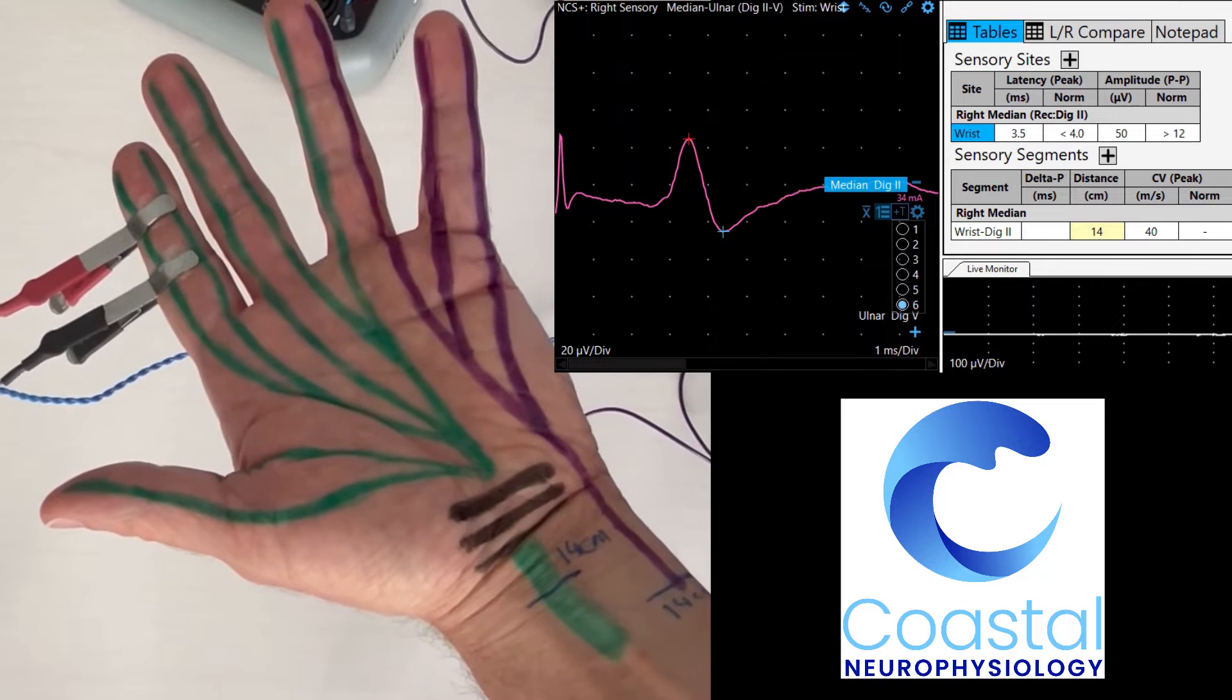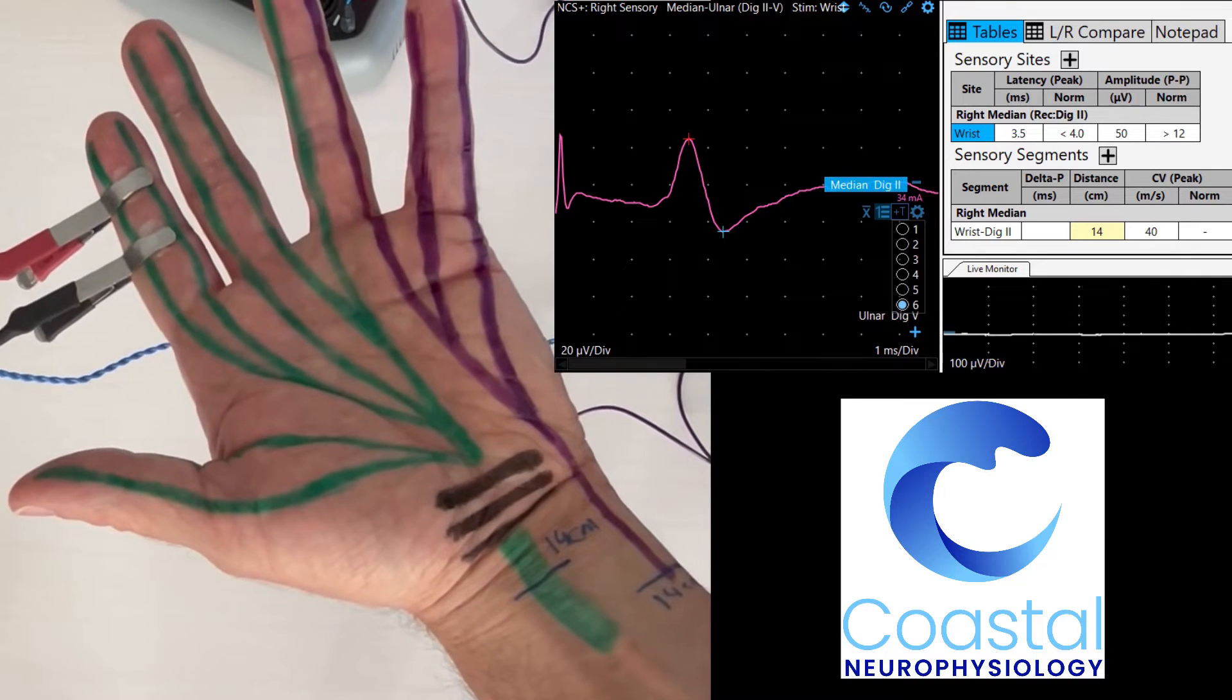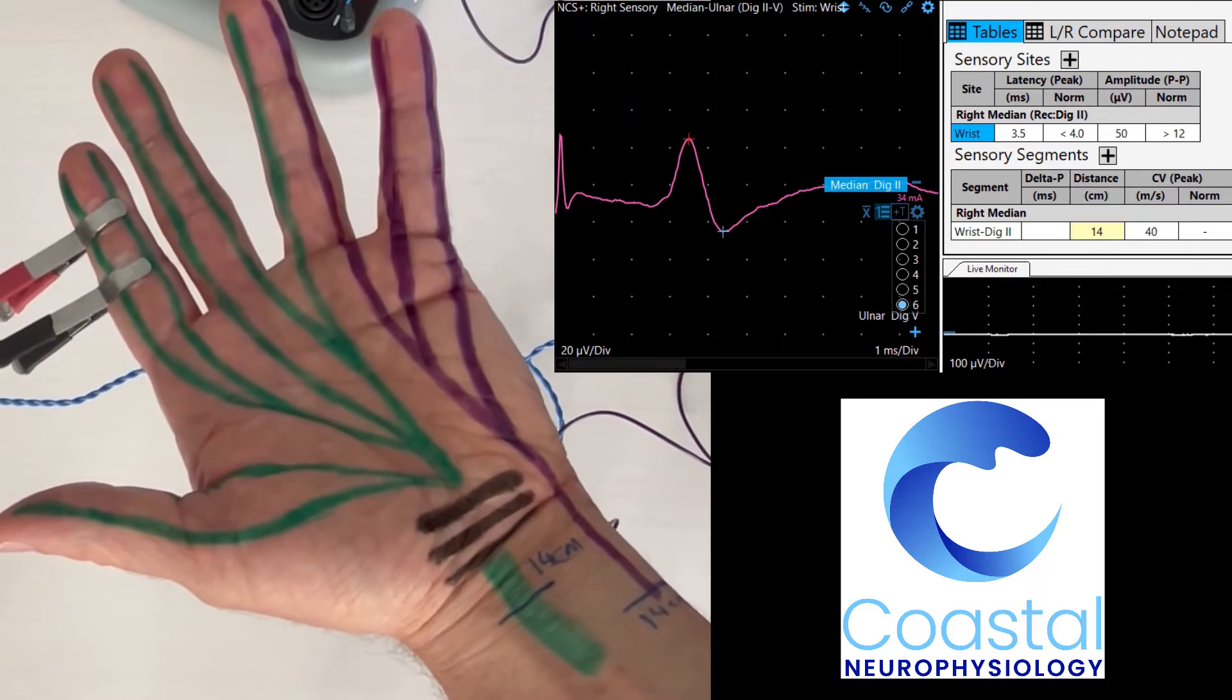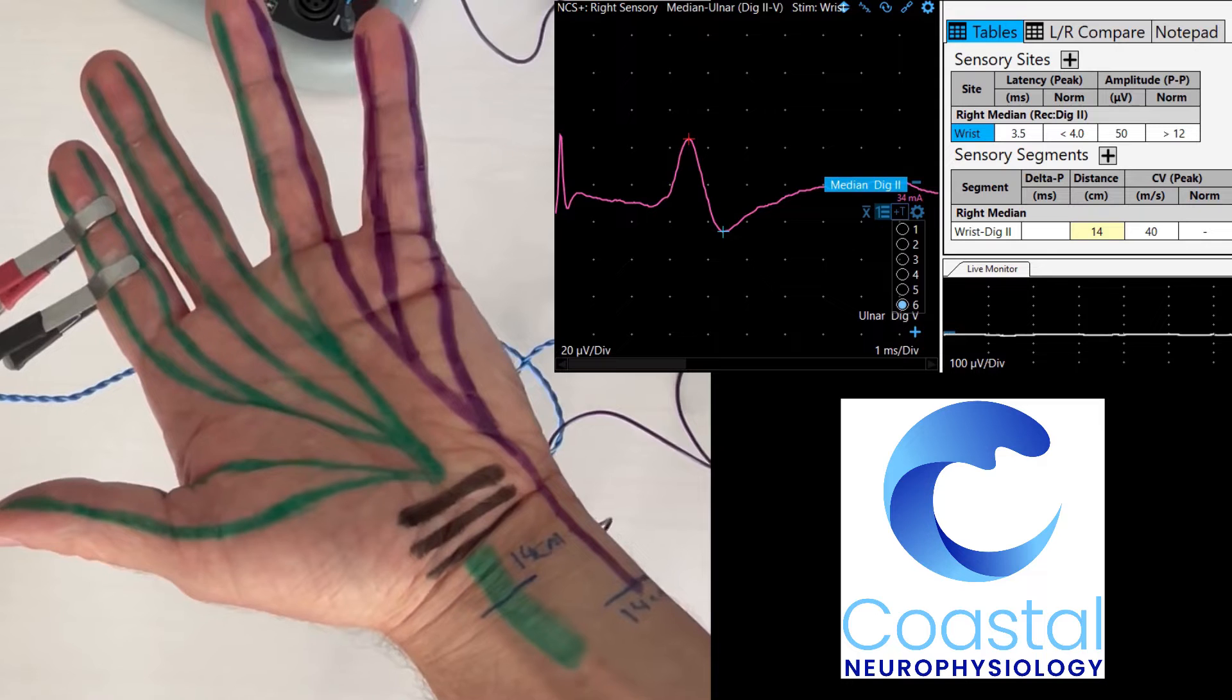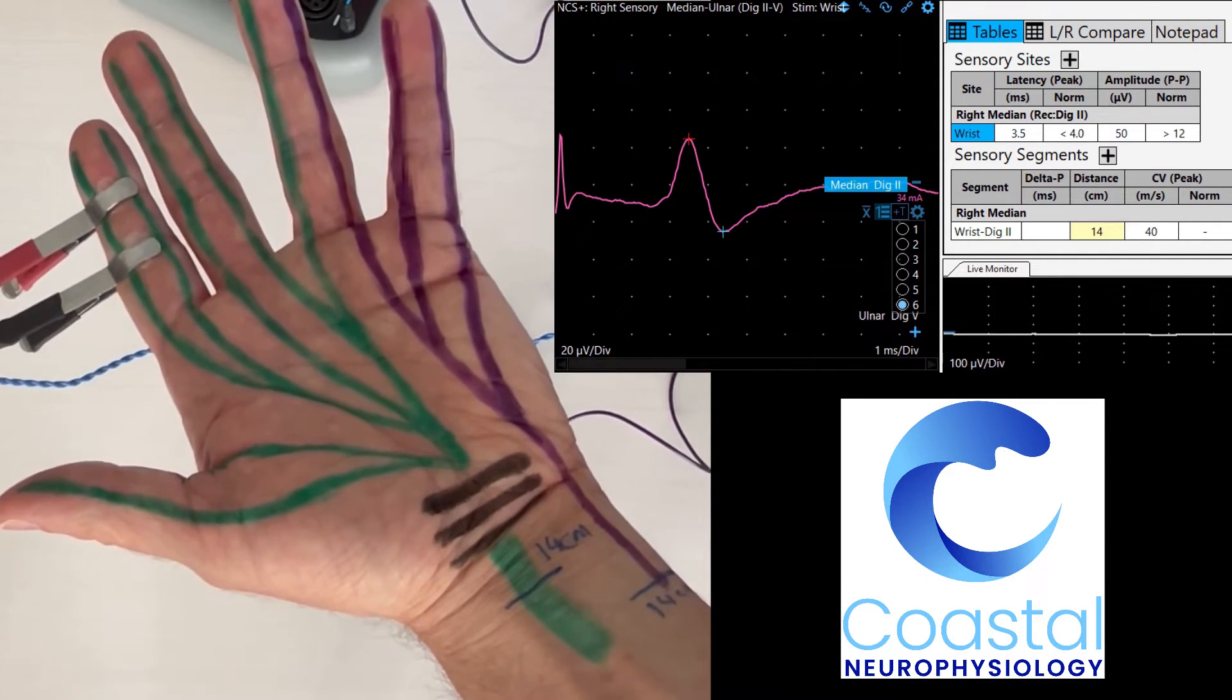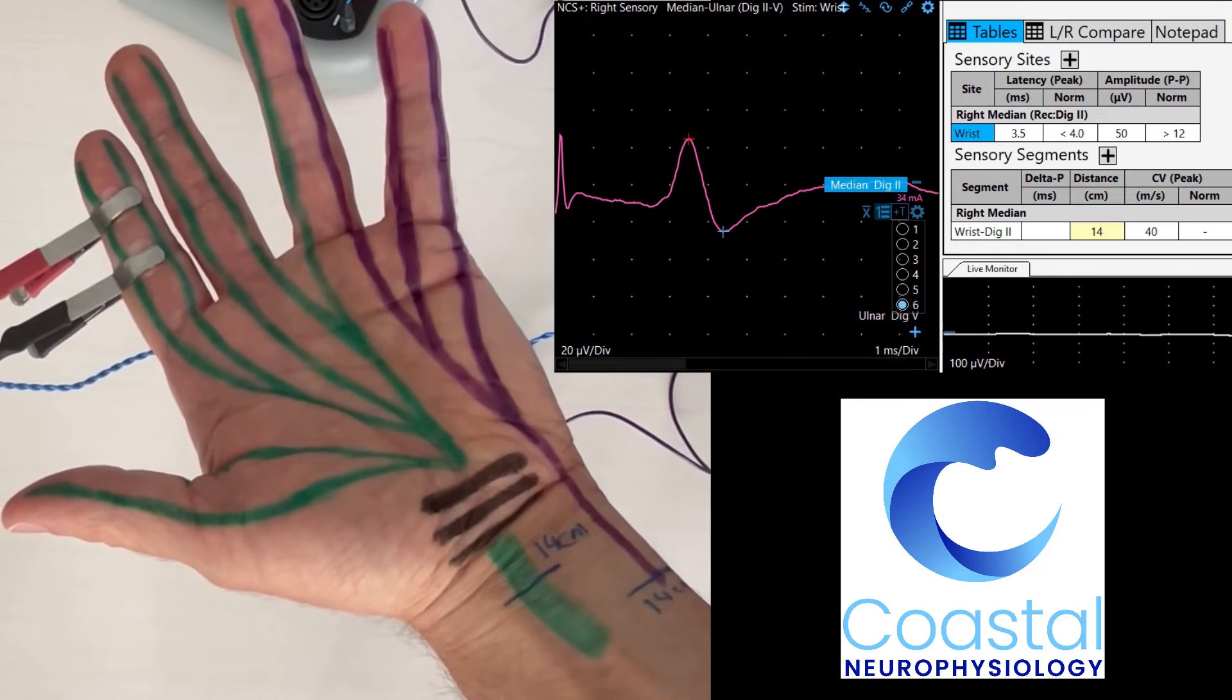There is a marker that you will see on my screen that says latency 3.5. That means it took 3.5 milliseconds for that signal to travel 14 centimeters from my wrist into my index finger. There is also a size of the signal there. It's in microvolts, it is 50. That is a very small signal in the sense that it is a millionth of a volt, a microvolt, but this is 50 microvolts. Anything above 12 in this situation is considered normal.